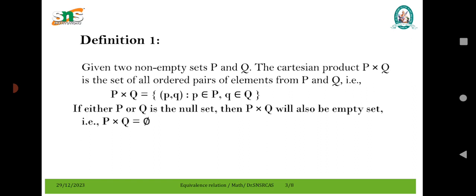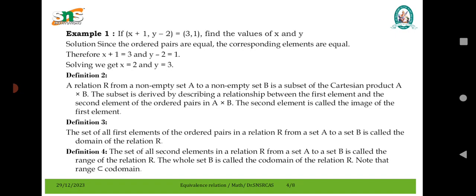Example: If X plus 1 equals 3 and Y minus 2 equals 1, that is (X+1, Y-2) equals (3, 1), then X plus 1 equals 3 means X equals 2, and Y minus 2 equals 1 means Y equals 3.